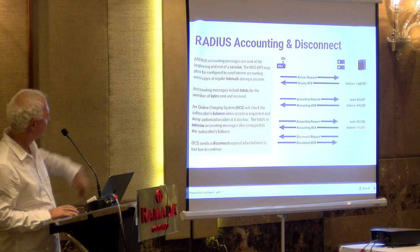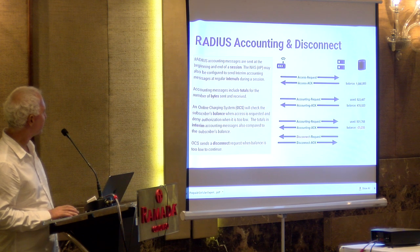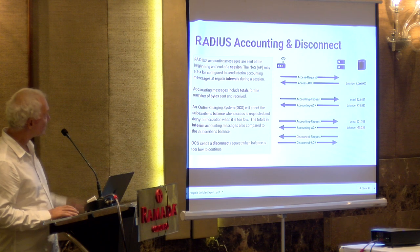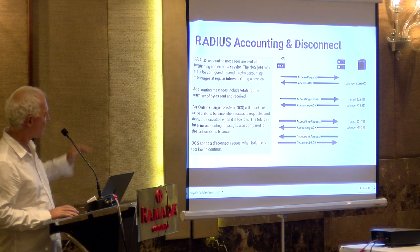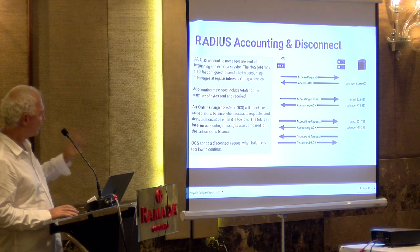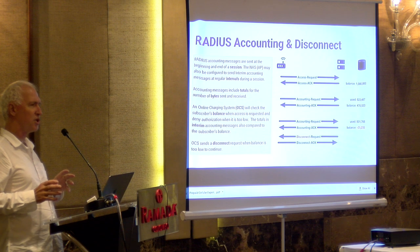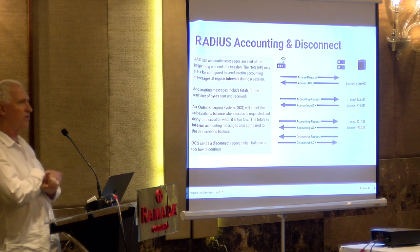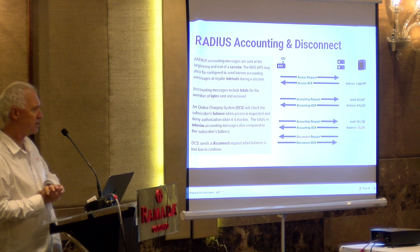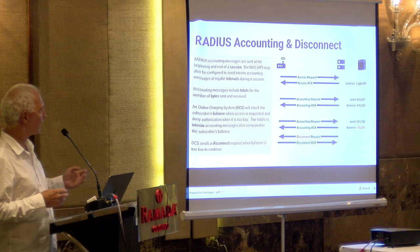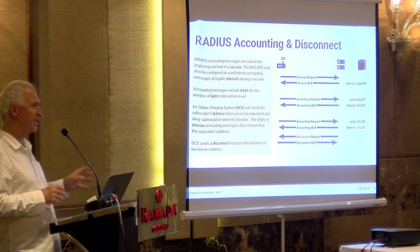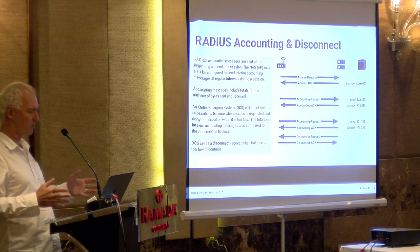In this example, we've got a million bytes of available credit. We receive an interim accounting message telling us that more than half of that was consumed. Then later another one comes in that has taken us into a negative balance situation. At that point, the online charging system sends a reverse RADIUS message — the RADIUS message is actually initiated by the server and sent to the network access server, the wireless access point — and disconnects that session. So we can actually disconnect a session in progress.